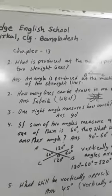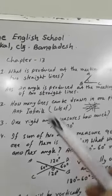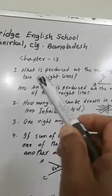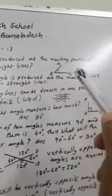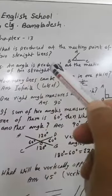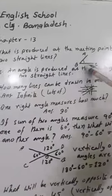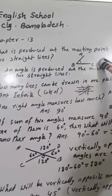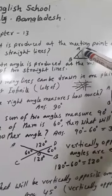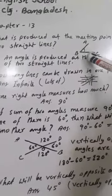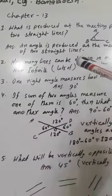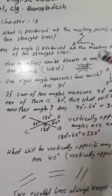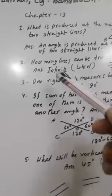Assalamualaikum. This is Math class 4. What is formed at the meeting point of two straight lines? At the meeting point of two straight lines, an angle is formed.